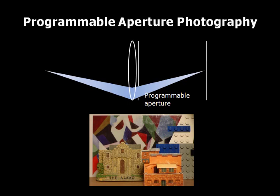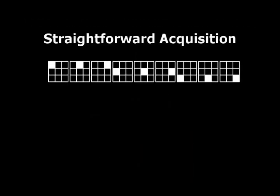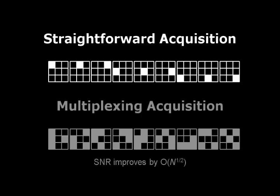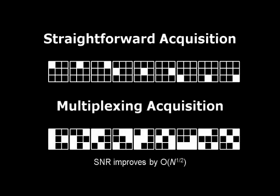Because in each exposure, only a small portion of the aperture is open, the resulting image may be noisy unless we increase the exposure time. We overcome this problem by introducing the multiplexing technique.